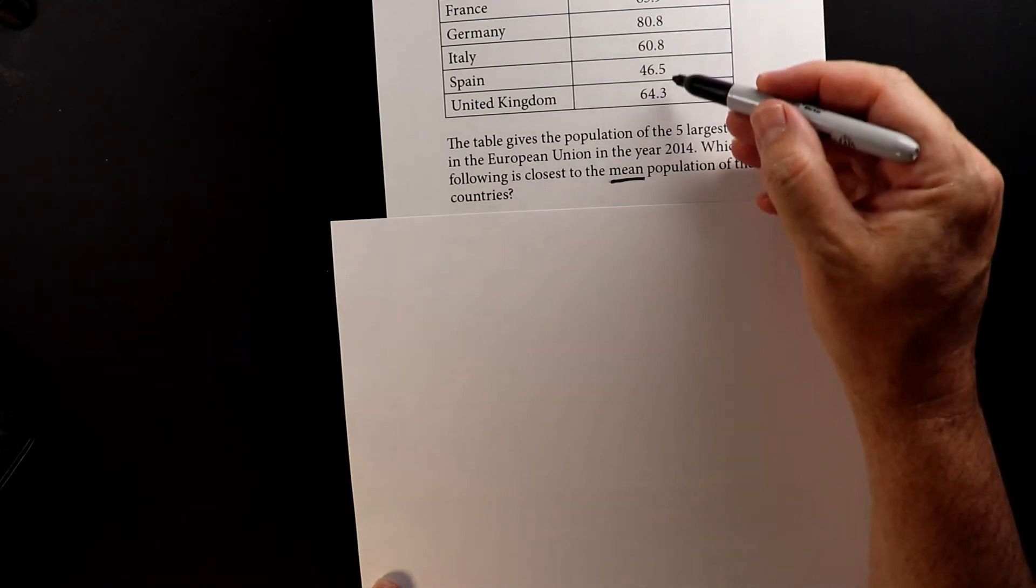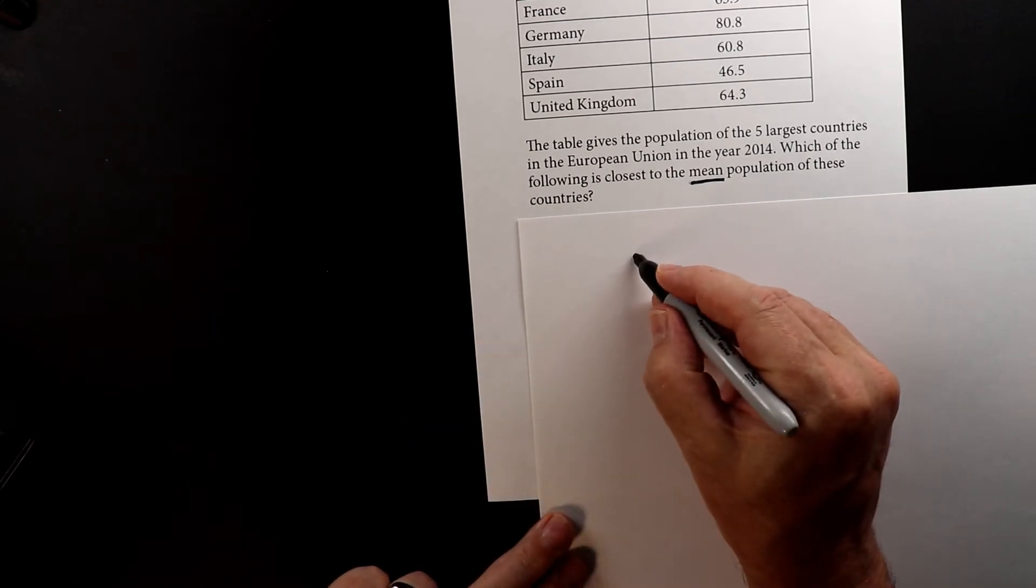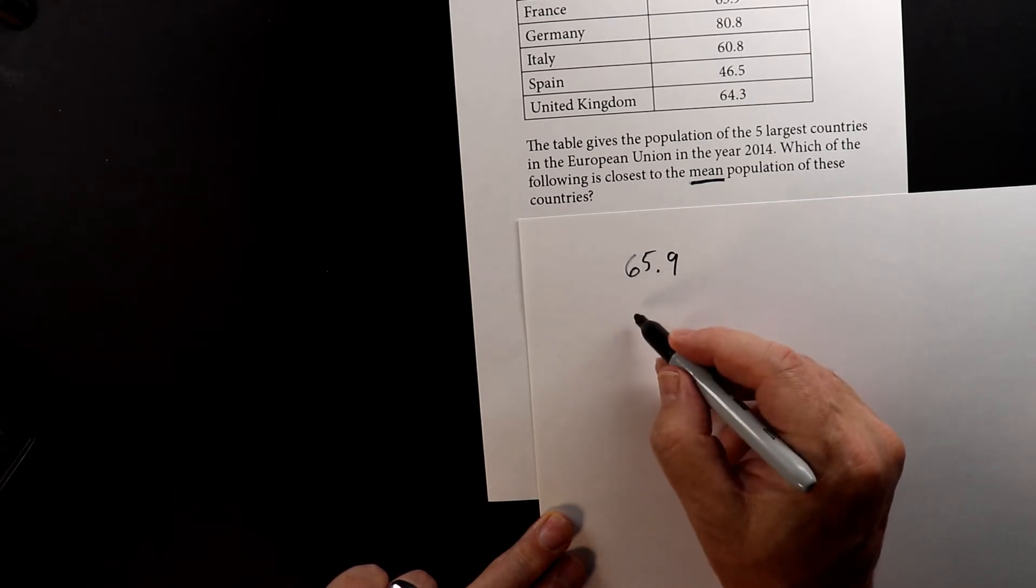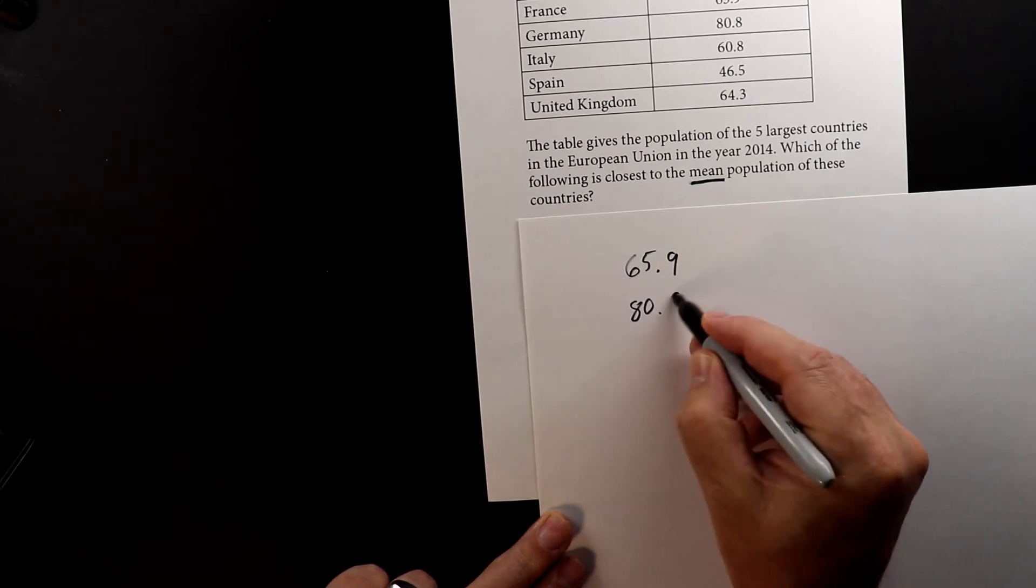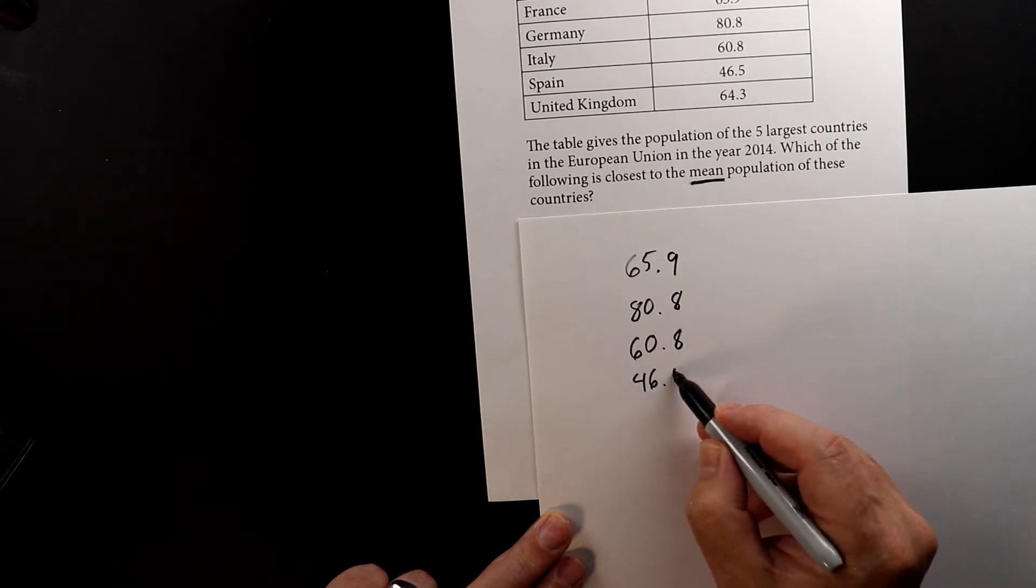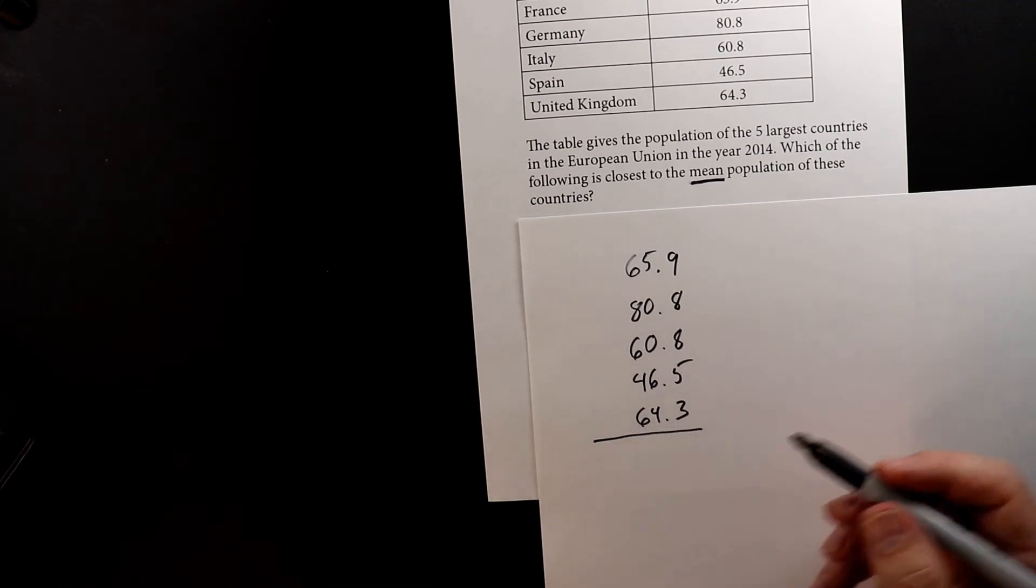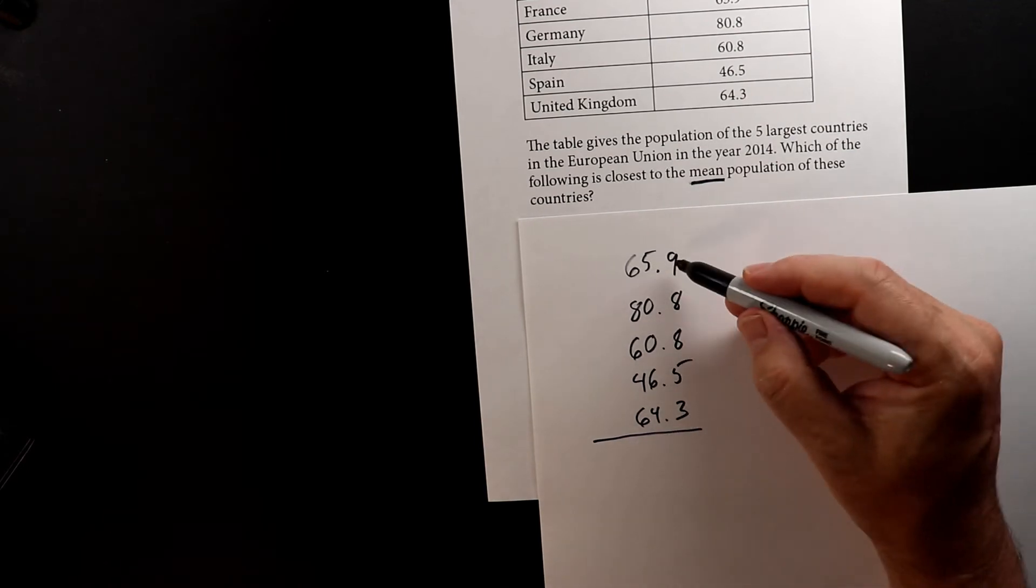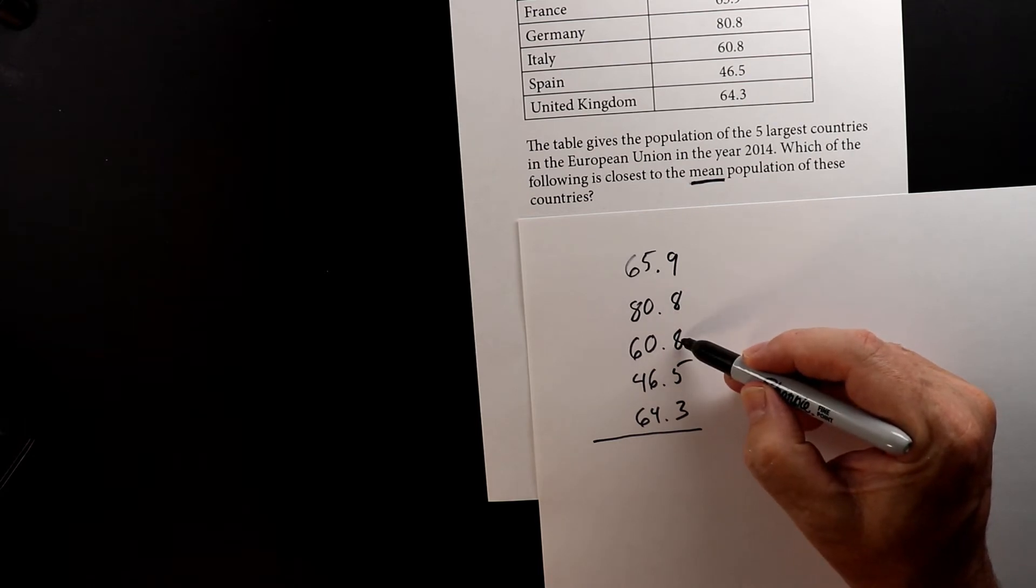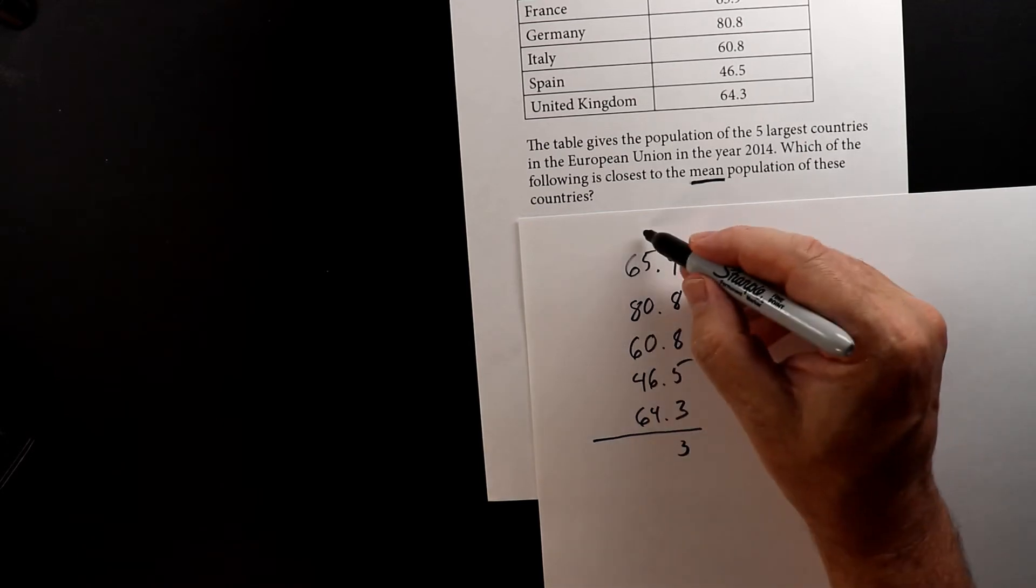So let's add up all of these numbers. So we have 65.9, and I'm going to try to keep my columns nice and neat. And then we have 80.8, 60.8, 46.5, and 64.3. So we're going to just go down the list and we're going to add them up. So 9 plus 8 is 17, 17 plus 8 is 25, 25 plus 5 is 30, 30 plus 3 is 33, and I carry the 3.